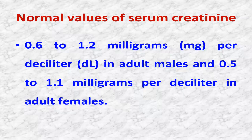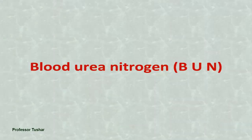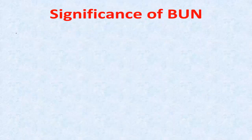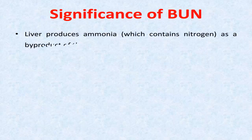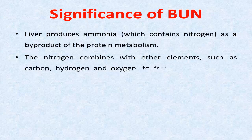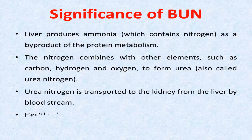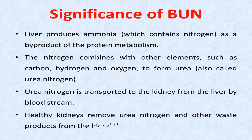Blood urea nitrogen (BUN): the liver produces ammonia, which contains nitrogen as a byproduct of protein metabolism. The nitrogen combines with other elements such as carbon, hydrogen, and oxygen to form urea, also called urea nitrogen. Urea nitrogen is transported to the kidney from the liver by the bloodstream. Healthy kidneys remove urea nitrogen and other waste products from the blood through urine.